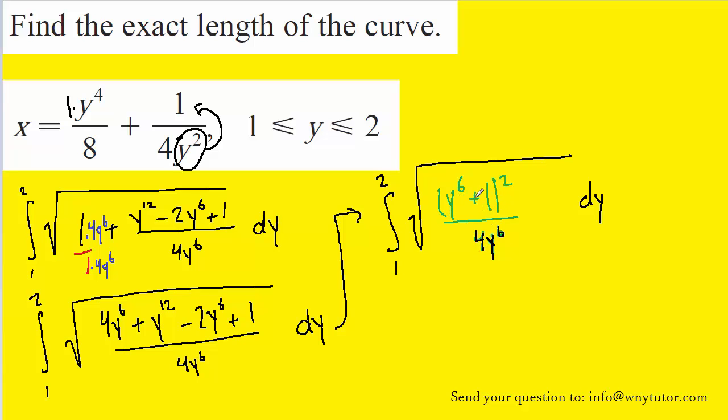And almost miraculously again, the numerator and the denominator are both perfect squares. And what's nice about having perfect squares underneath a square root symbol is that the expression greatly simplifies.